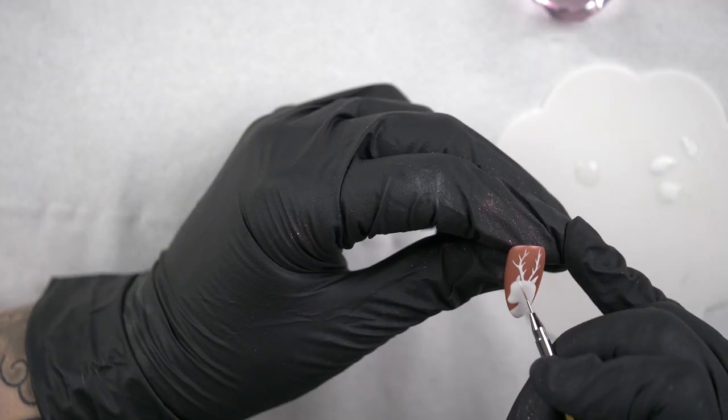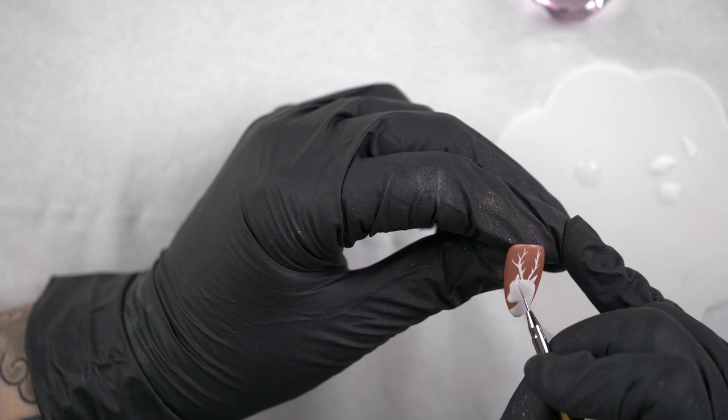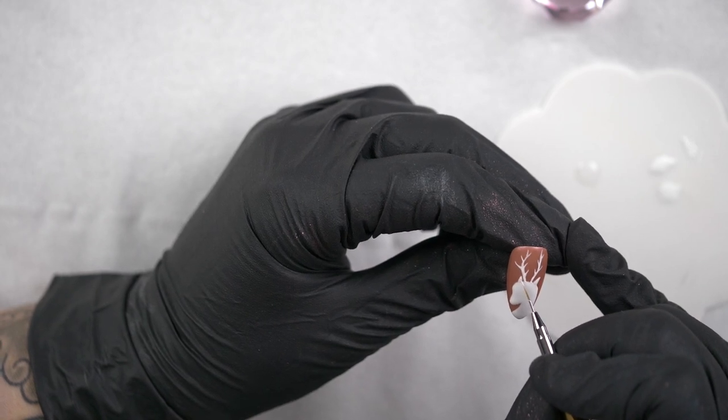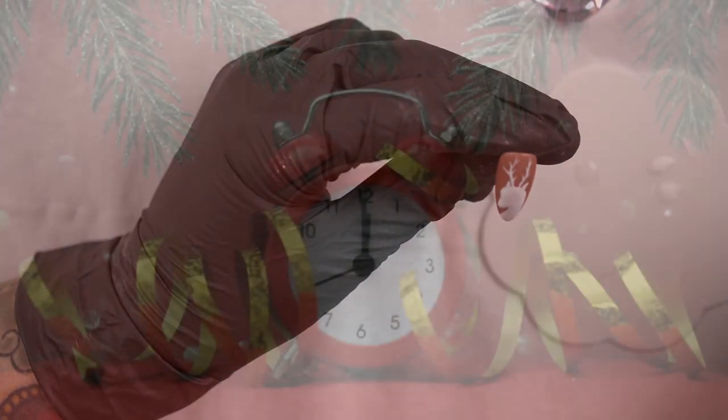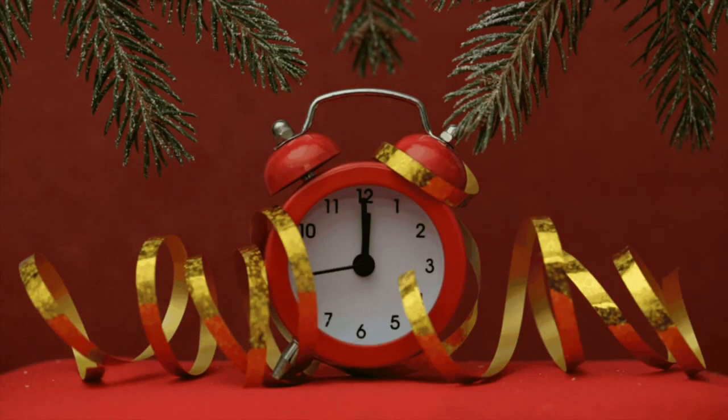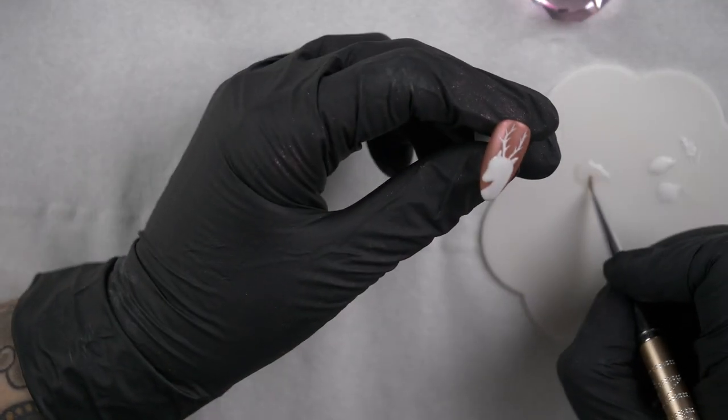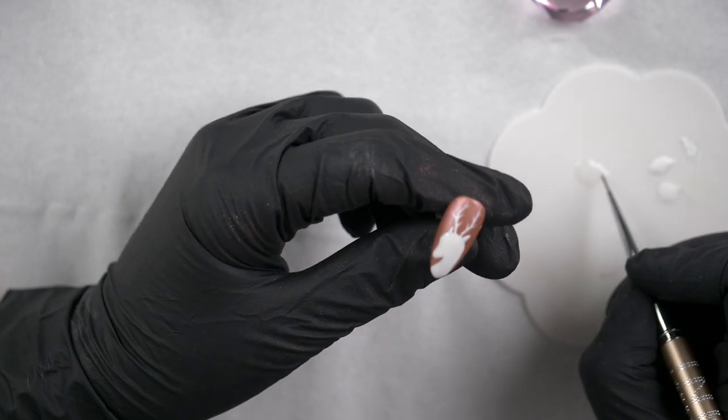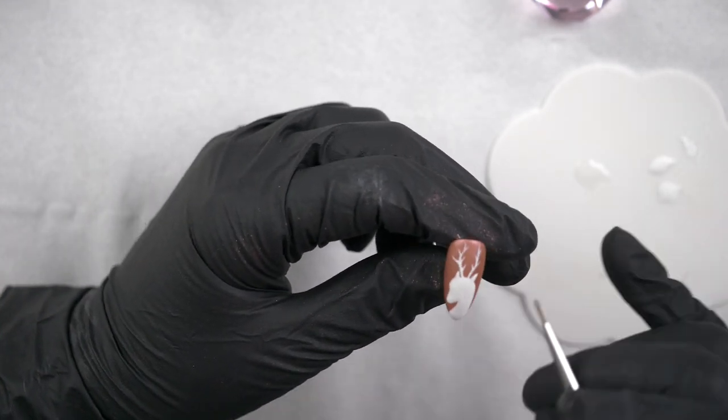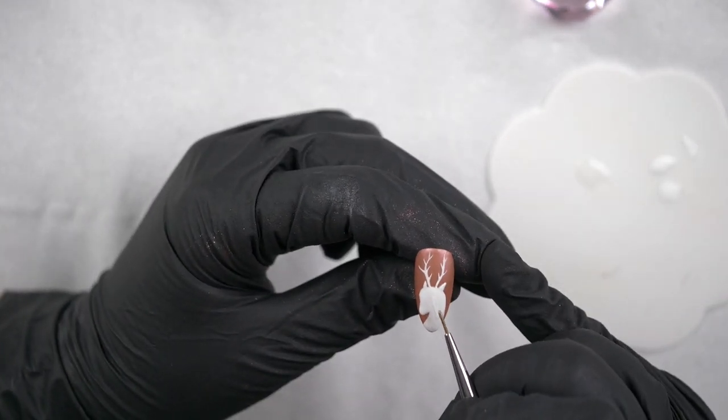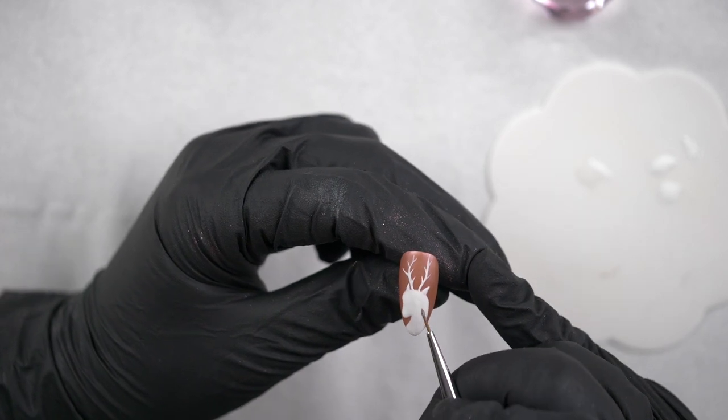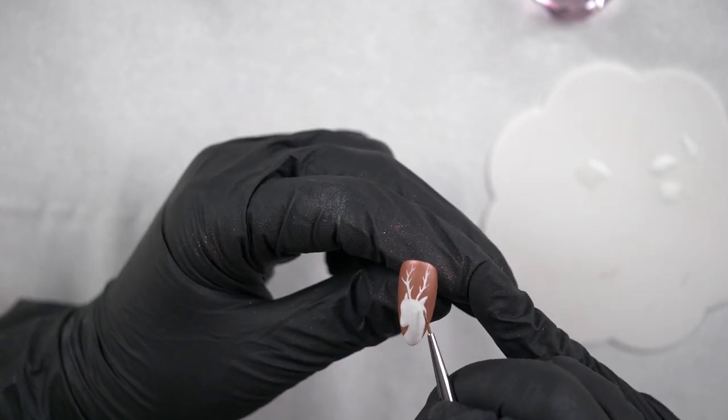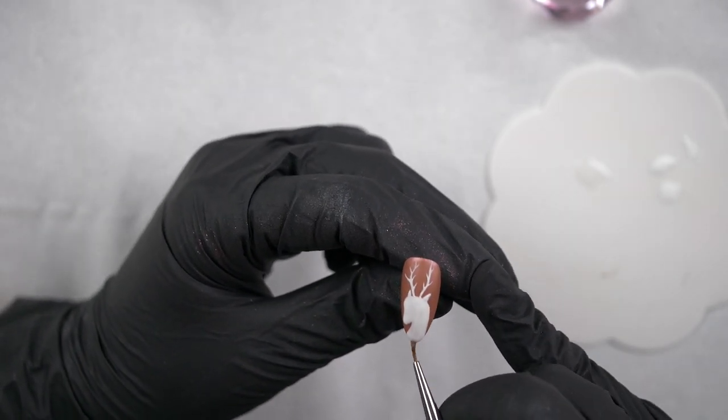Once you've done your antlers, pop it in to cure. And then I'm going to top coat over his head. So once that's out of the lamp, I'm using the ultimate no-wipe top coat and my Vice Versa brush, and I'm just going to cover my stag in the top coat.